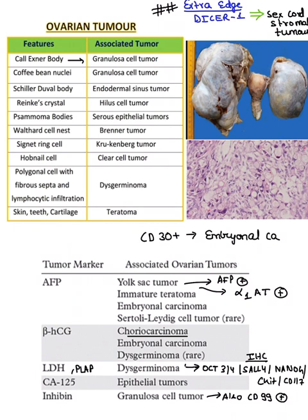First is the Call-Axner body and coffee bean nuclei — both are seen in granulosa cell tumor. How will you remember it? Call the 'granny' and coffee granules — you can remember it is seen in granulosa cell tumor.